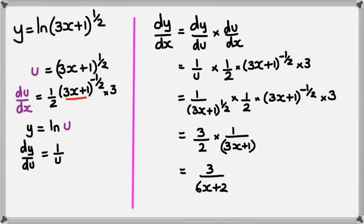Obviously the short method is faster than the chain rule method, but both give the same answer. That's how you do differentiation of log functions — thanks for watching!